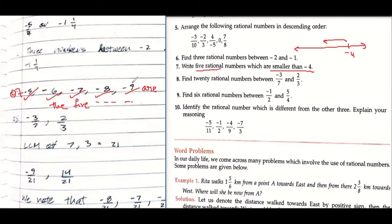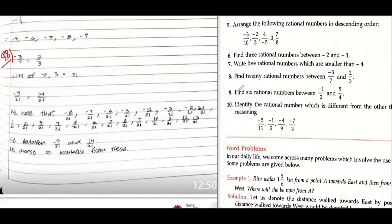Please write it down. Next, find 20 rational numbers between minus 3 upon 7 and 2 upon 3. Can you explain your process? Why didn't you use the mean method that you were using earlier?